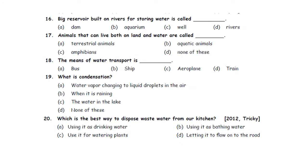Question sixteen: Big reservoir built on rivers for storing water is called dash. A. Dam. B. Aquarium. C. Well. D. Rivers. The answer is option A — Dam.